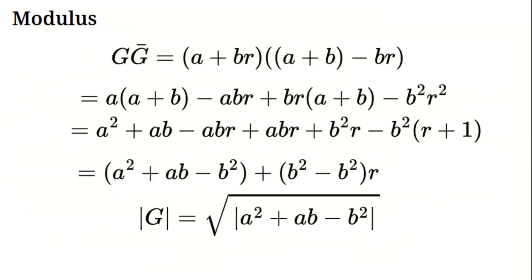The modulus is the square root of the absolute value of A squared plus AB minus B squared. Numbers where this equals plus or minus 1 lie on hyperbolas, our version of a unit circle. Let's try division.